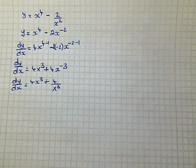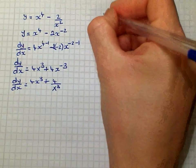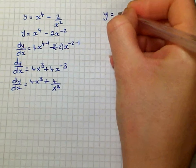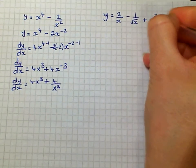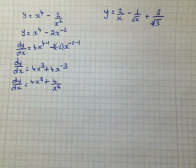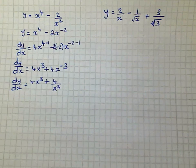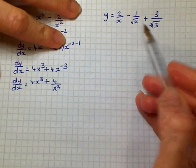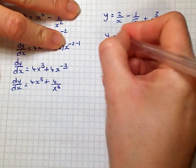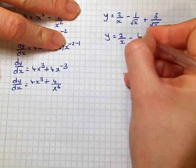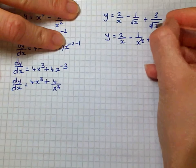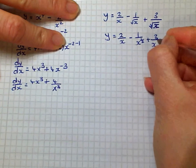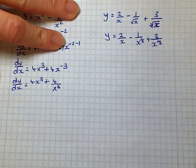The next example involves roots. If you have a function: 2 over x, minus 1 over the square root of x, plus 3 over the cube root of x. To do this question, first we have to convert our roots to indices. So y is equal to 2 over x, minus 1 over x to the power of a half, plus 3 over x to the power of one third.